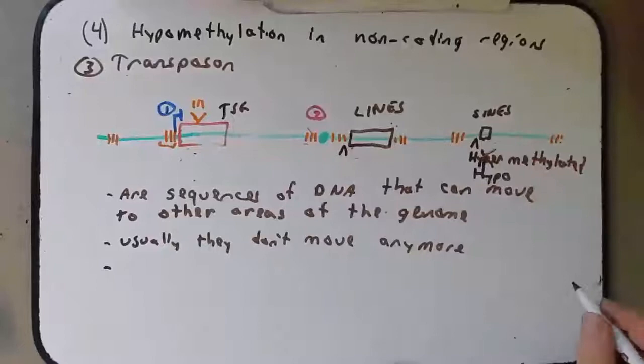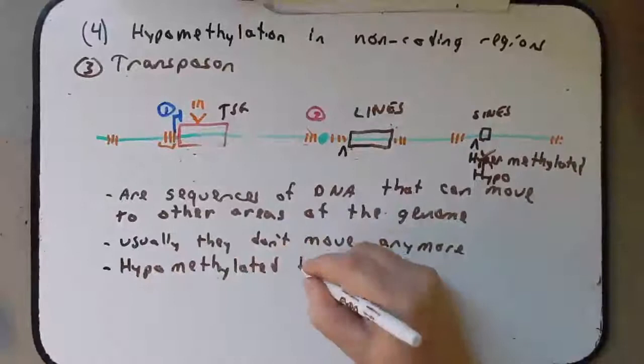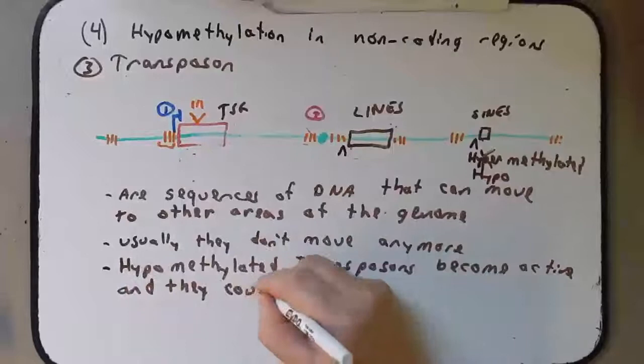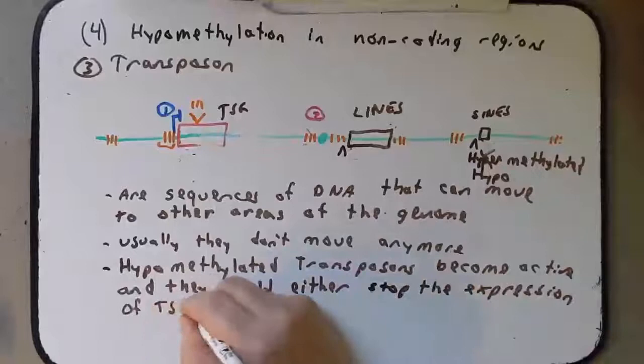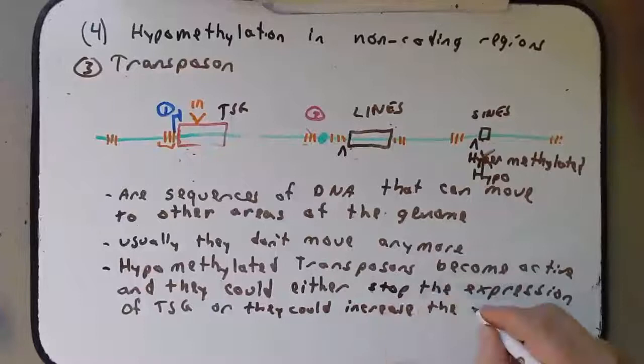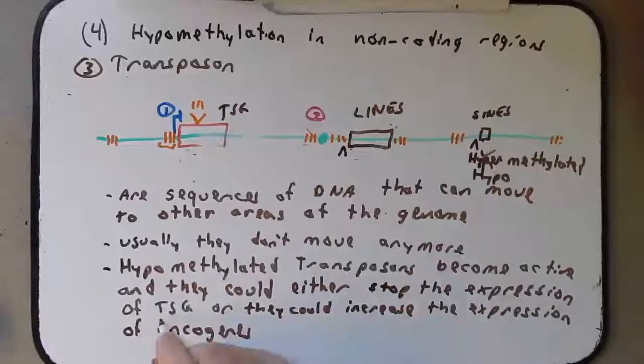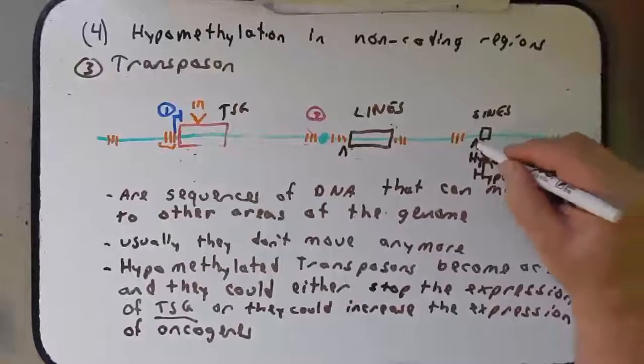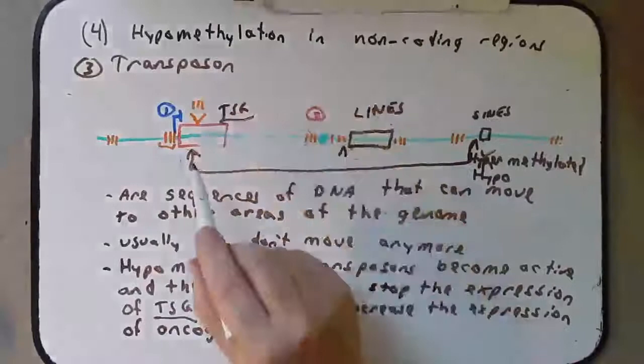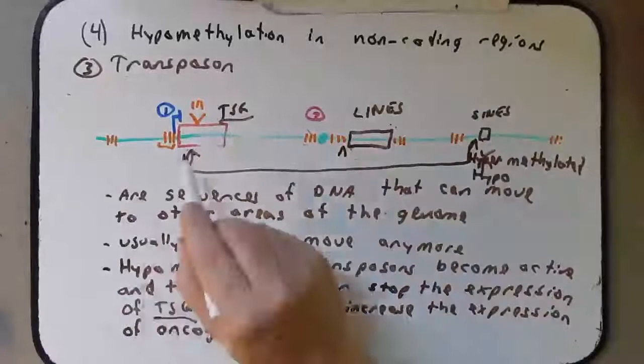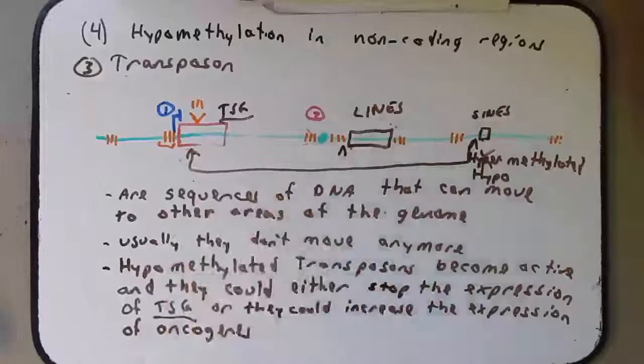Hypomethylated transposons become active and they could either stop the expression of tumor suppressor genes or increase the expression of oncogenes. Thinking about tumor suppressor genes — if a SINE becomes hypomethylated and moves, and if it plops right in the middle of a tumor suppressor gene, you can imagine how that could make the gene mutated. Or it may pop in front of the promoter so it can't be expressed. Either case, the tumor suppressor gene is not activated.